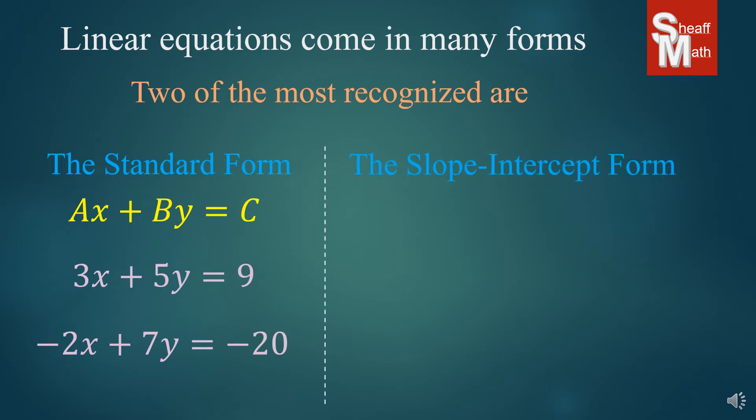Then we have the slope-intercept form, the other recognizable one. And this one is y = mx + b. So we have y by itself, the equal sign, and then some number of x's, and then some number after the x's.